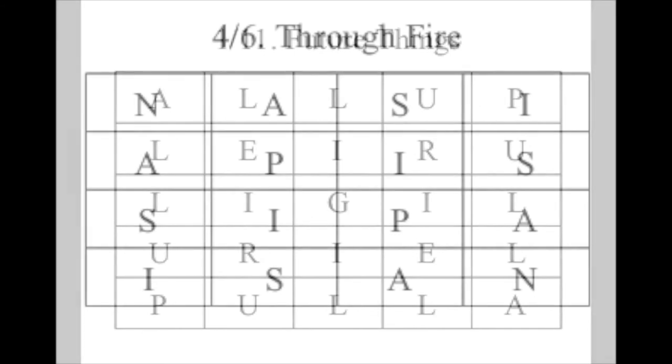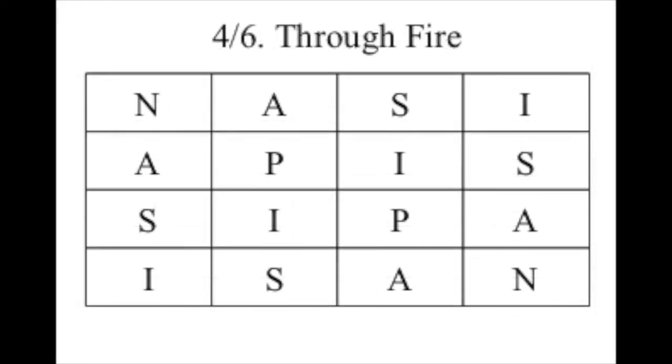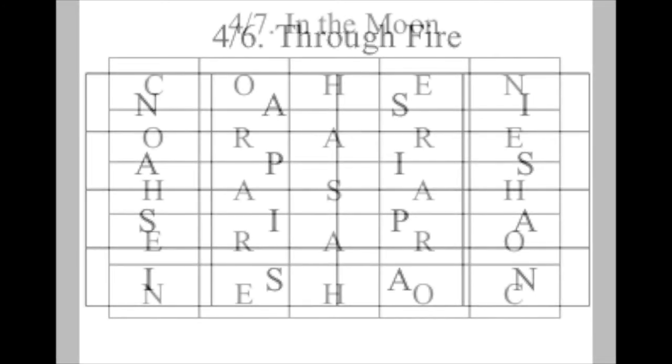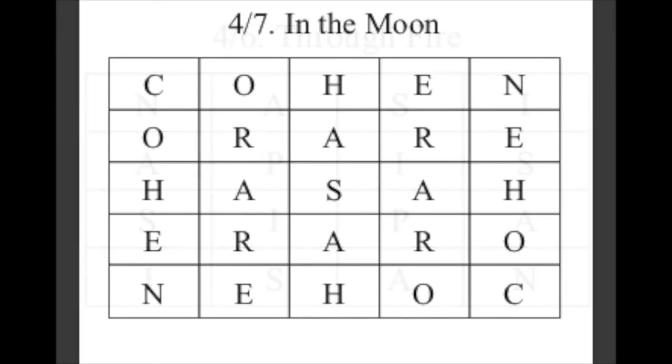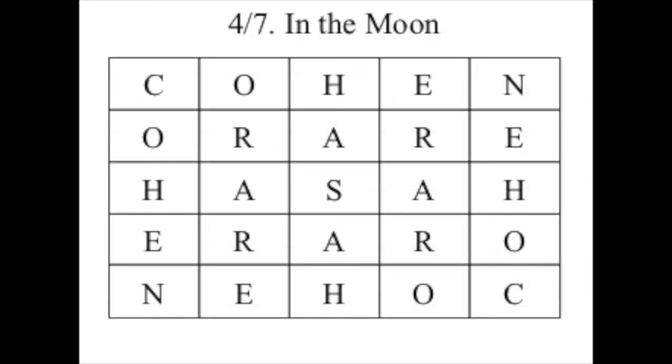The fourth section gives a collection of around 250 magic word squares. Mathers' translation provides a fifth section attempting to translate where possible these magic word squares into their linguistic origins.